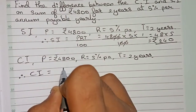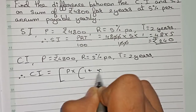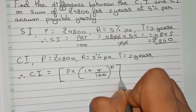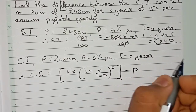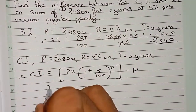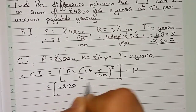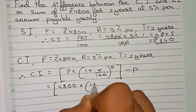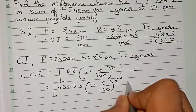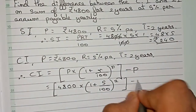Therefore CI equals the formula: principal into one plus rate by hundred to the power n, bracket close, minus principal. Putting in the values: four thousand eight hundred into one plus five by hundred to the power two, minus four thousand eight hundred.